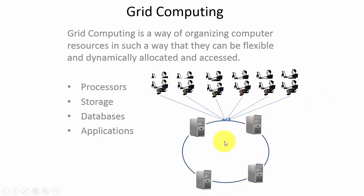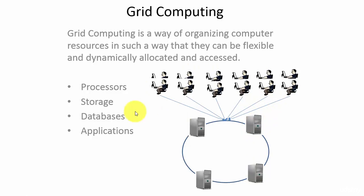Since the load is shared by all the servers, the performance will be good. Another advantage is, even if we lose a couple of servers, we still have the remaining servers to help the users. In grid computing, we can have multiple processors, multiple storage devices, multiple databases, or multiple application servers, so that even if one fails, we have another one, and they can serve a huge number of users.